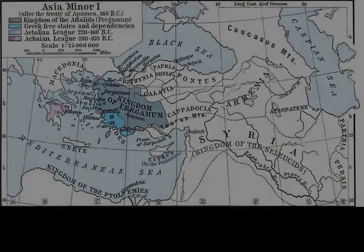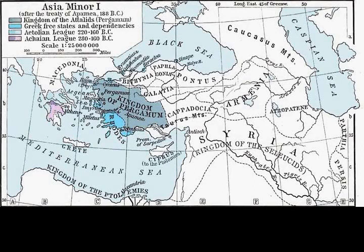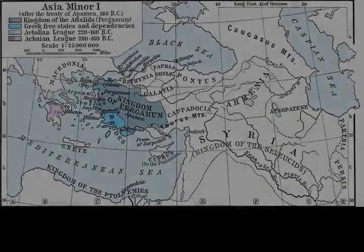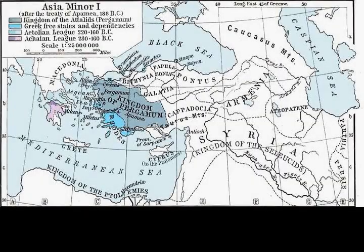The Battle of Myonesus took place in September 190 BC. It was fought as part of the Roman-Seleucid War, pitting the fleets of the Roman Republic led by Admiral Lucius Aemilius Regilus and its Rhodian allies under Eudamus against a Seleucid fleet of Polyxinidas.